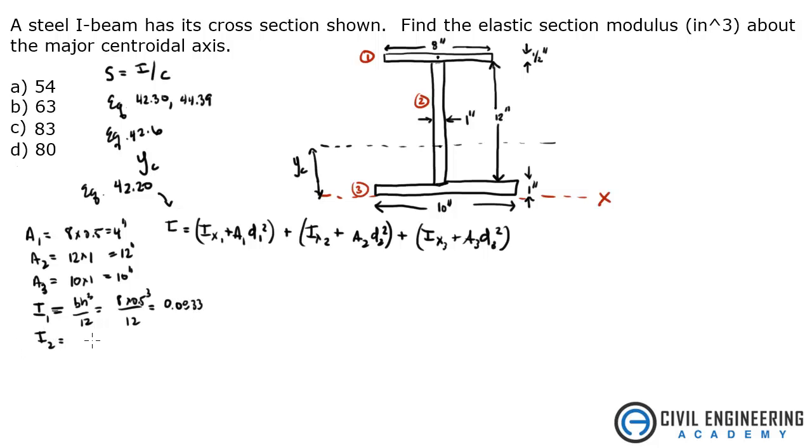I2 is going to be 1 times 12 cubed over 12, that's 144. And I3 is going to be base times height, 1 inch cubed over 12. This is for that bottom piece, that's going to be 0.833. Now we need to solve for Y.